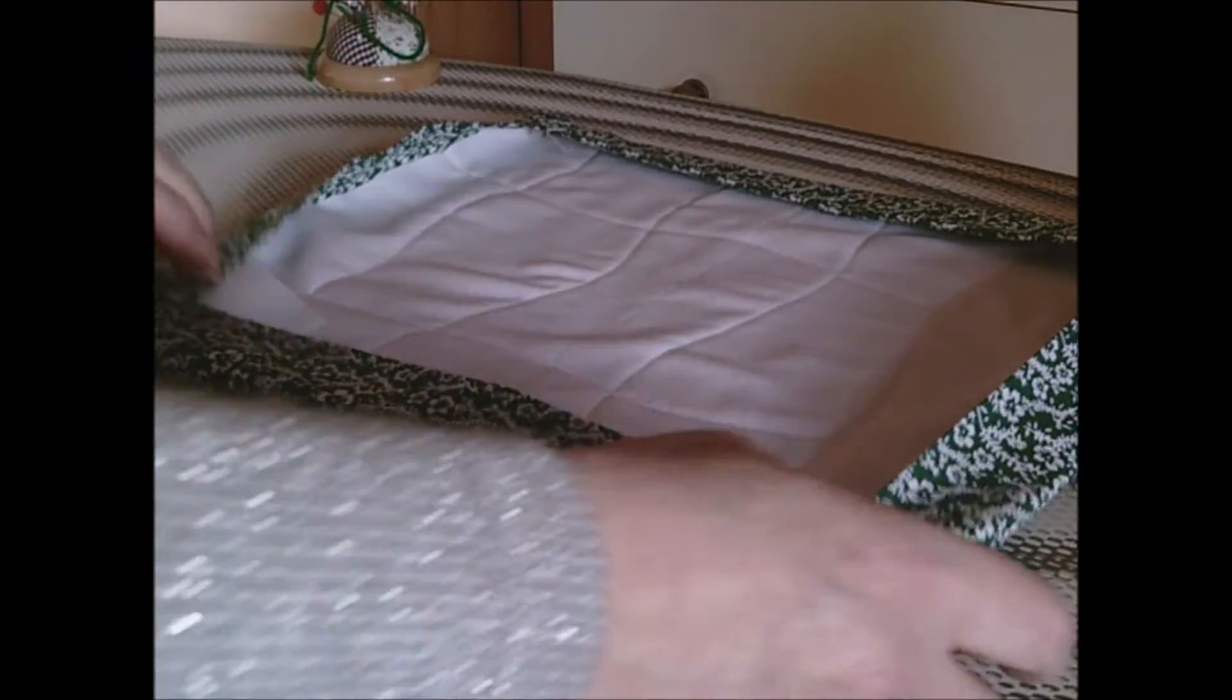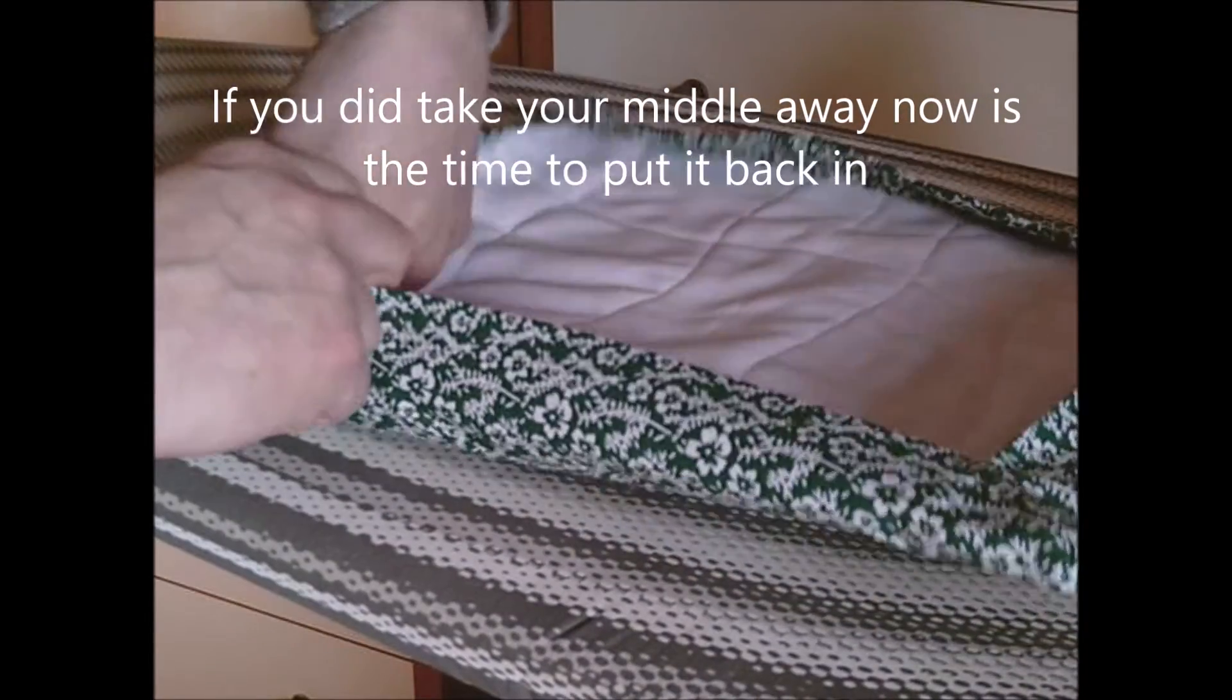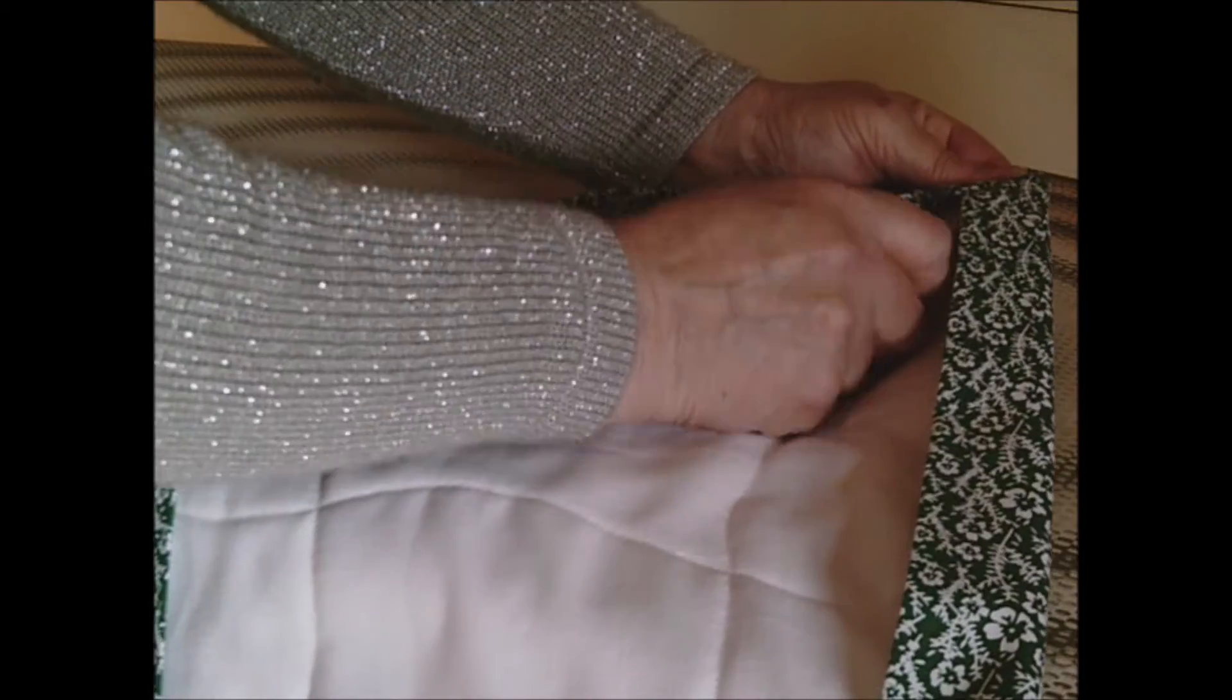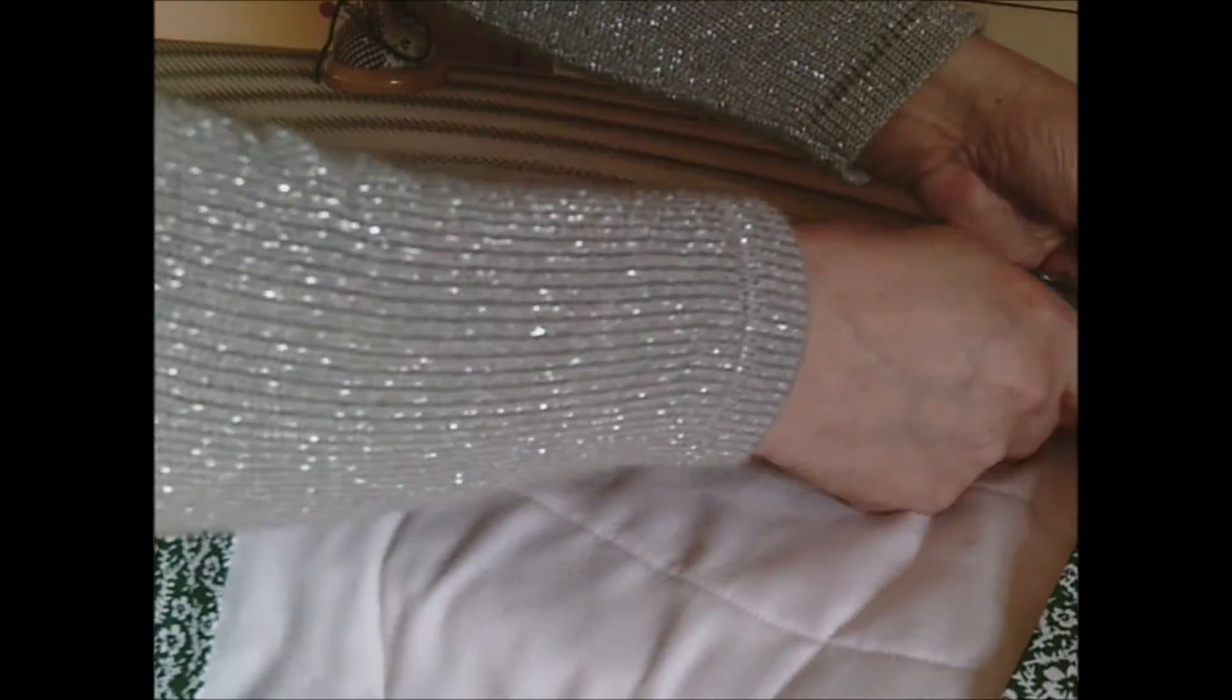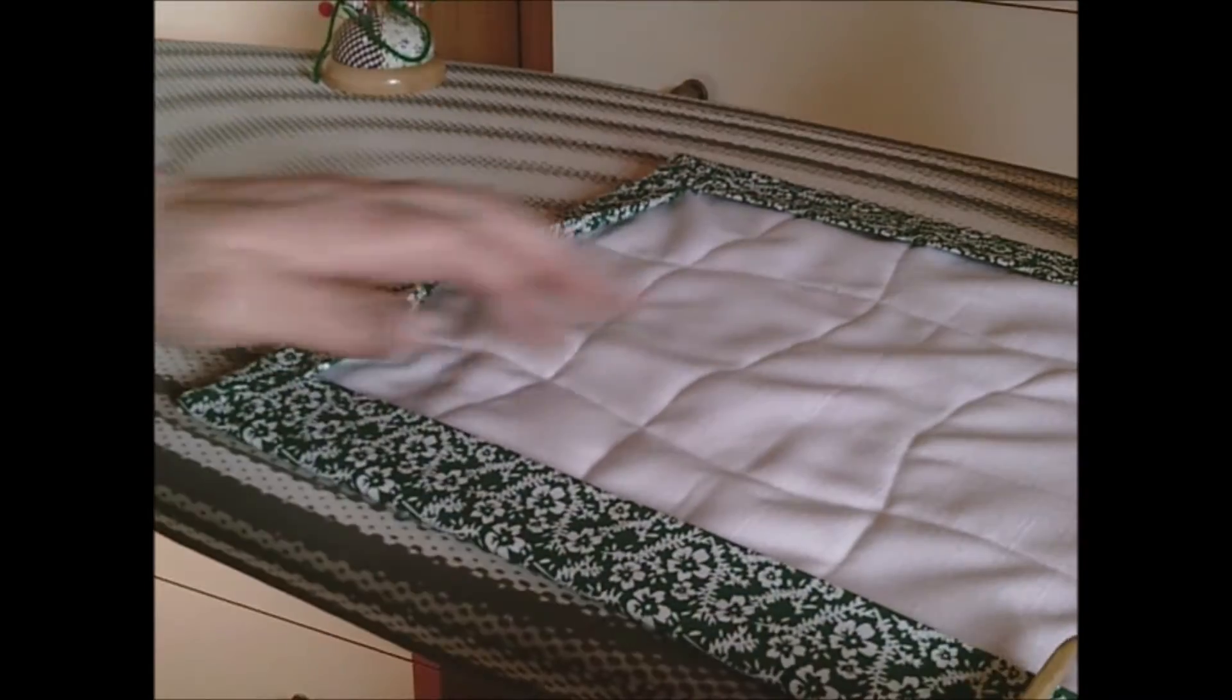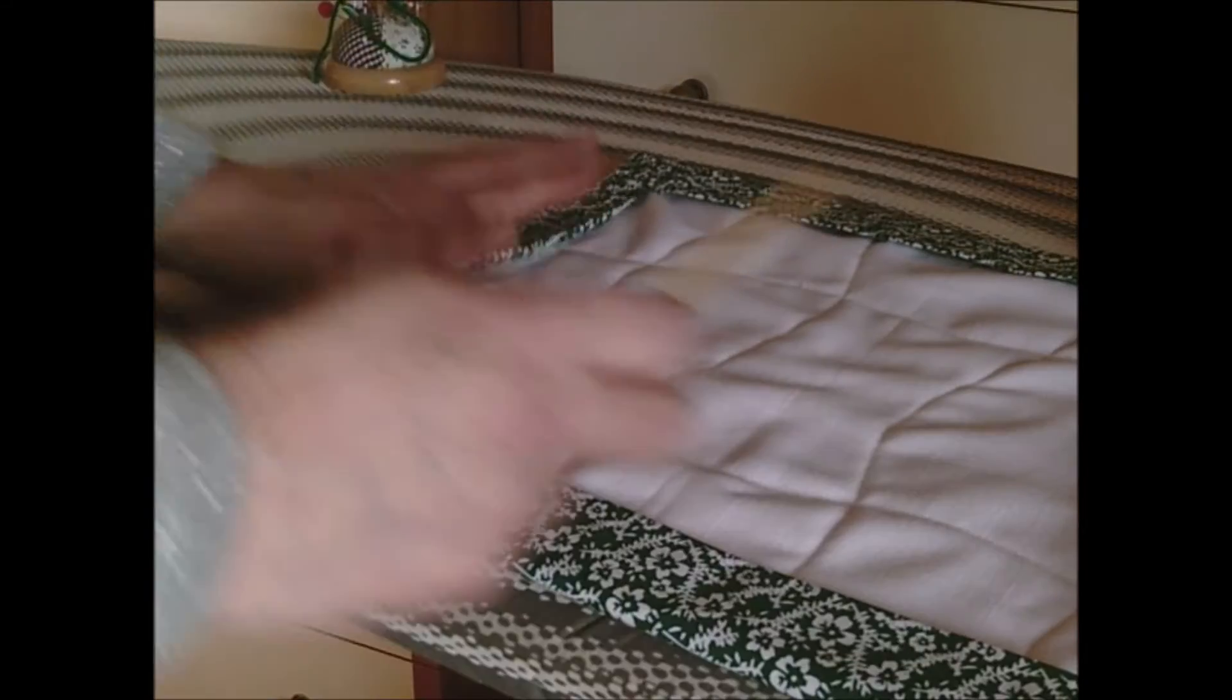When you've finished sewing - this is the back end and you've sewn from the reverse - and you turn it the other way, then you can make sure all your corners are pushed out. Try not to go through and make a hole. Make sure they're really neat and tidy, you've got them as far as you can get them. If you have problems, you can always cut at an angle to reduce the bulk.